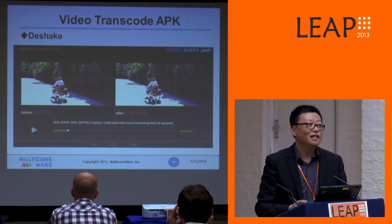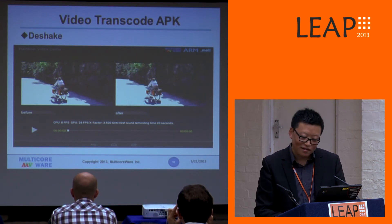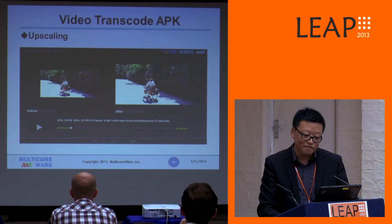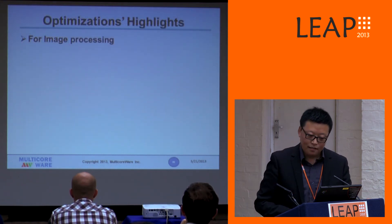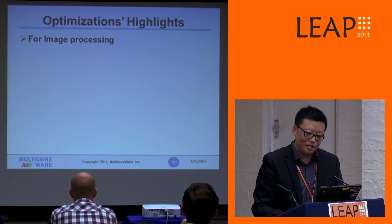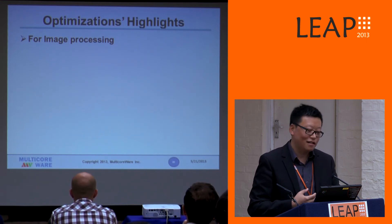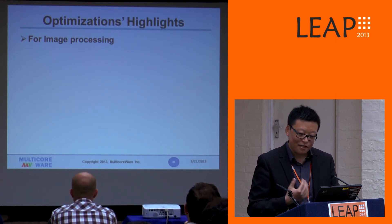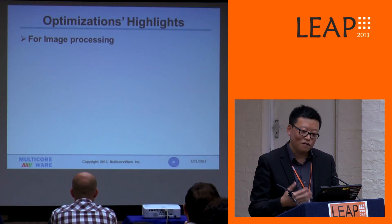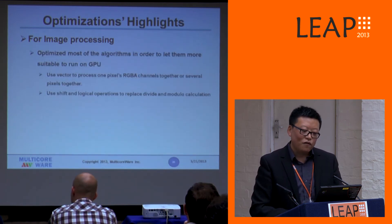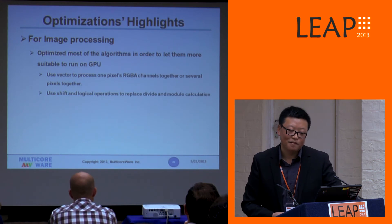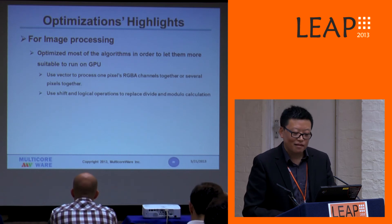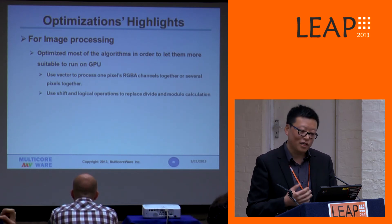I want to spend a bit more time talking about the optimizations we have done for our work, as these may be helpful for other developers. For image processing, we first optimize the algorithm itself to make sure it is more suitable to run on GPU. We use vectors to process one pixel's RGBA channels together, or combine several pixels and process all at once.